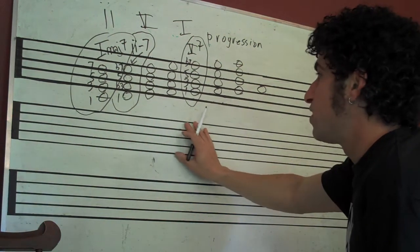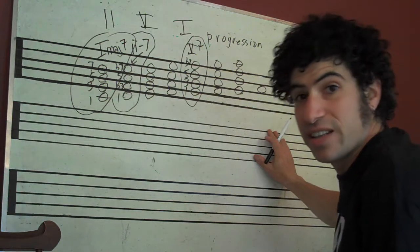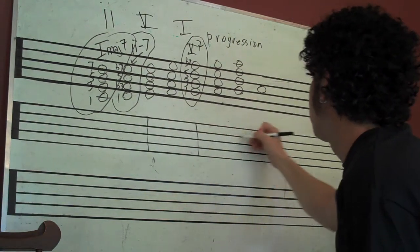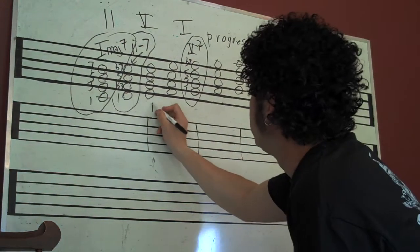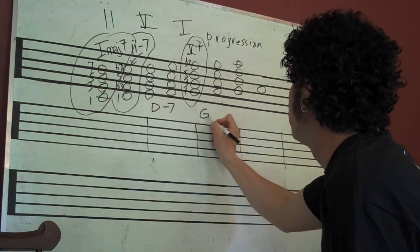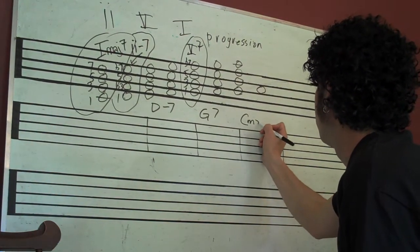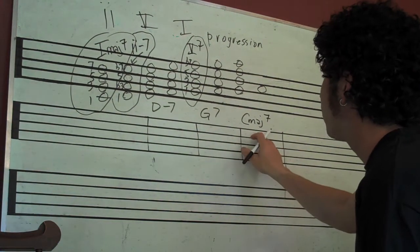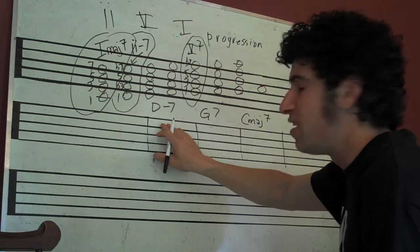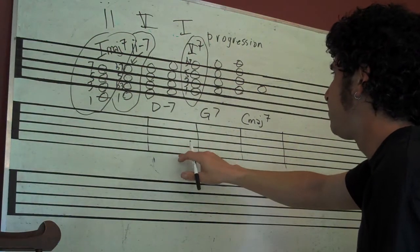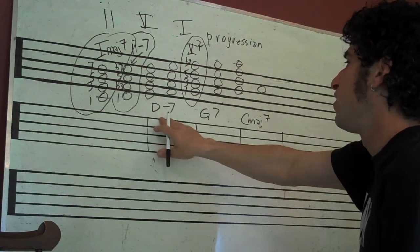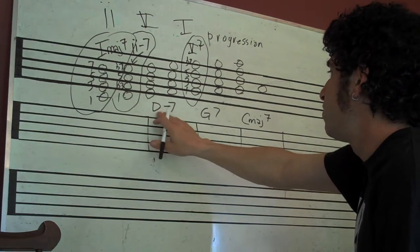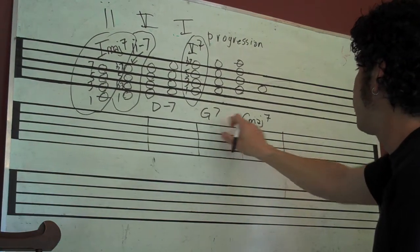If you were to see this progression on a lead sheet, it would probably look something like this: D minor seven, G dominant seven to C major seven. Sometimes you see different chord symbols - I don't know if we talked about that in another video - but on a lead sheet you might see something like this. The chords are just notated here with these chord symbols.